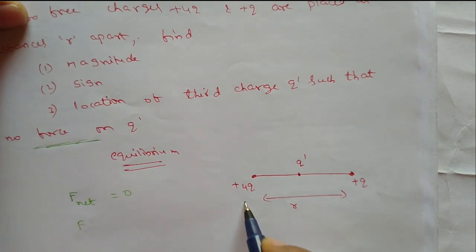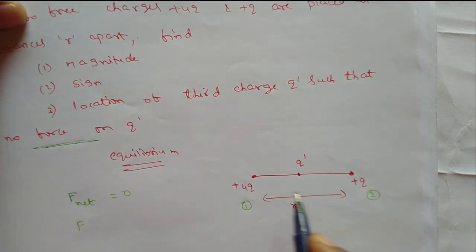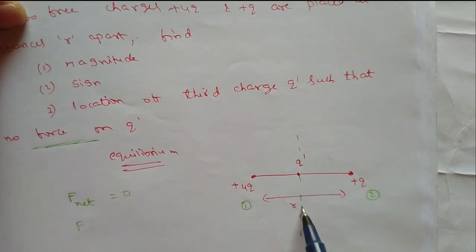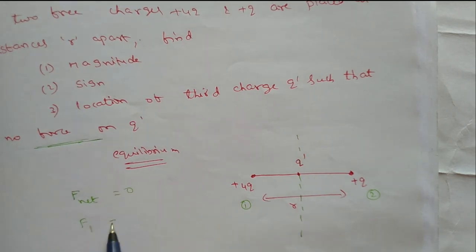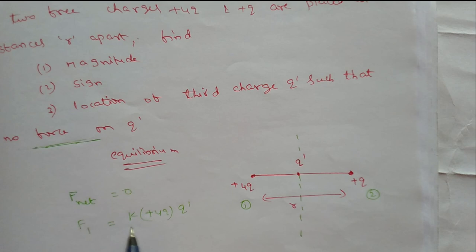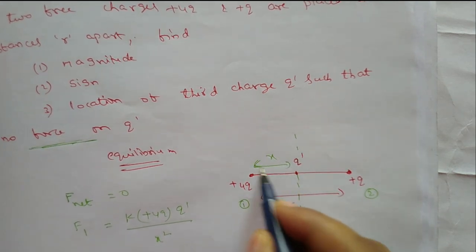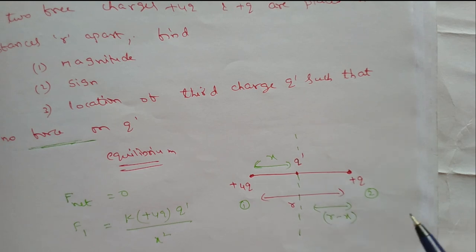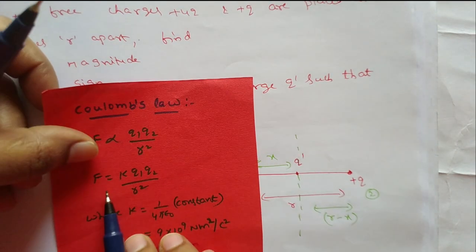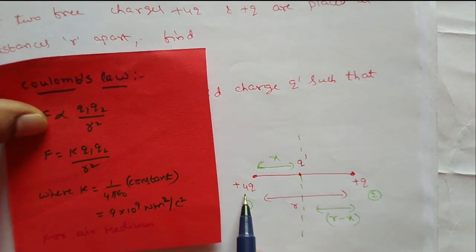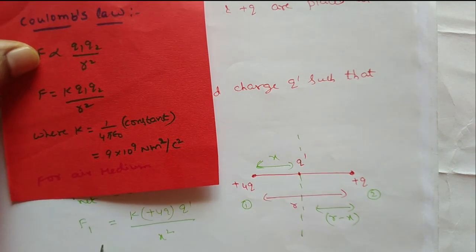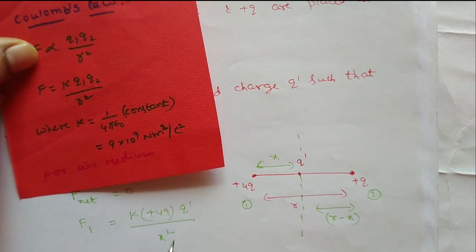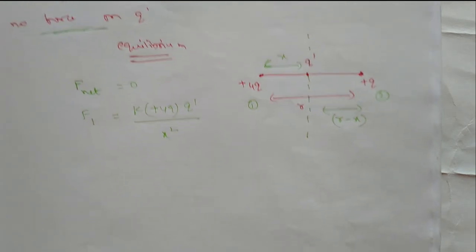Let the two existing charges be labeled one and two. The force due to plus 4q charge on q dash is F1. Let us draw a line at q dash. The force F1 equals k times 4q times q dash divided by x squared, where x is the distance from plus 4q to q dash. According to Coulomb's law, F equals k q1 q2 divided by r squared, so F1 equals k times 4q times q dash divided by x squared.